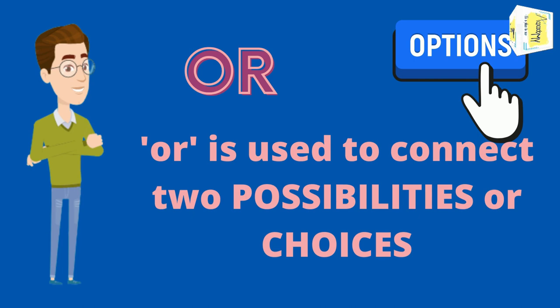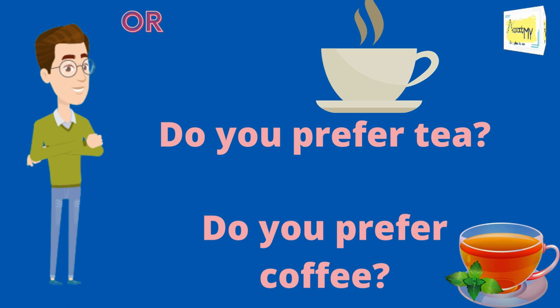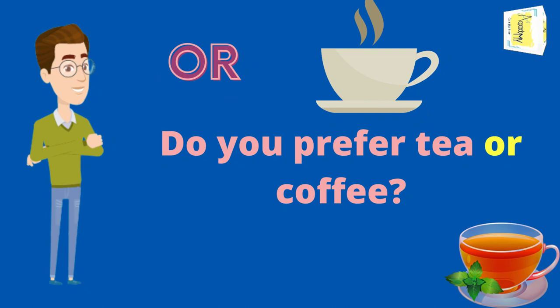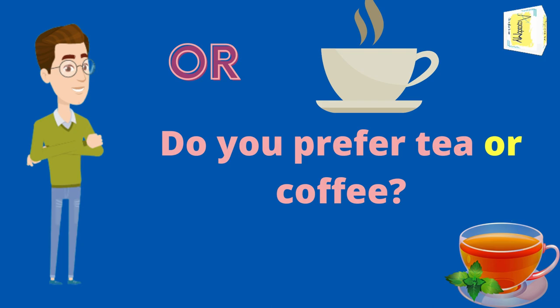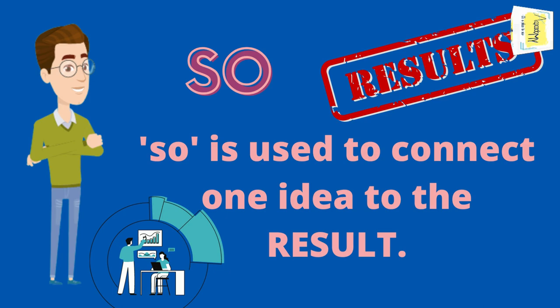Next is conjunction 'or.' 'Or' is used to connect two possibilities or choices. For example: 'Do you prefer tea?' 'Do you prefer coffee?' I can combine these two questions into one using conjunction 'or': 'Do you prefer tea or coffee?' — asking for choices or options.